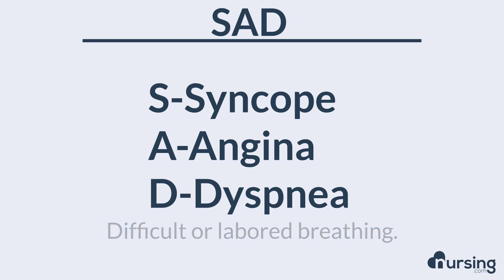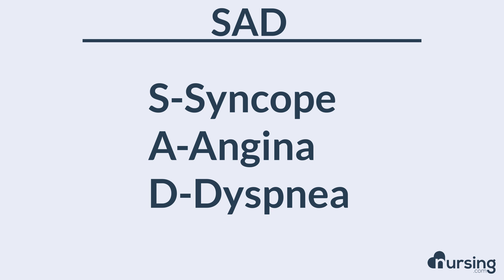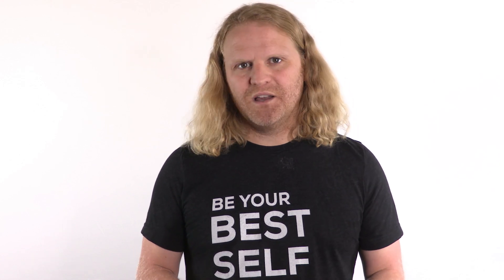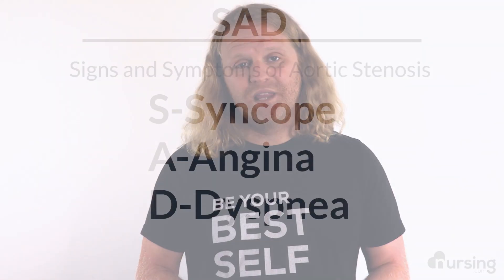Think about what's happening here. Our aortic valve is having a hard time opening, so we're not getting blood going back out into the system. This patient isn't getting as much blood leaving their heart as they should, meaning oxygen isn't going to the system — that leads to the syncope. As blood doesn't leave the heart and go into the aorta, we're not perfusing the heart like we need to, and that causes the angina. The dyspnea occurs with the difficult or labored breathing.